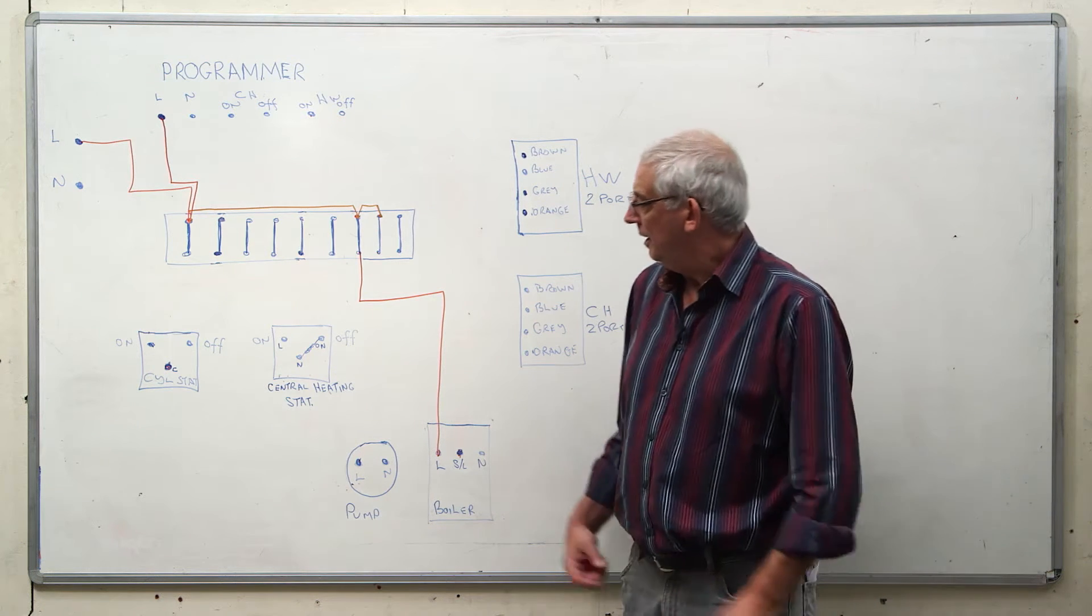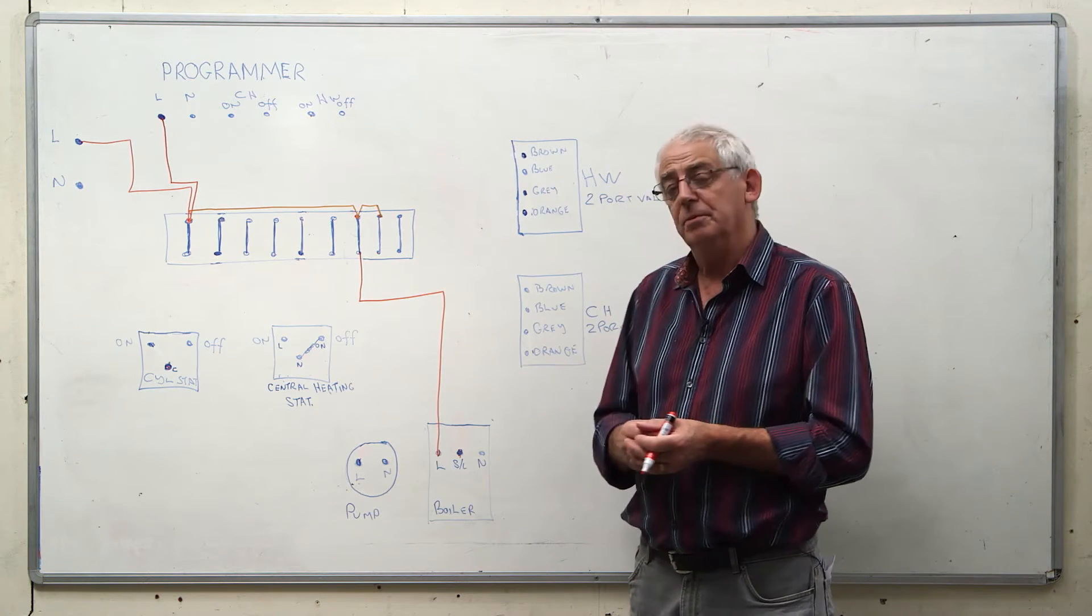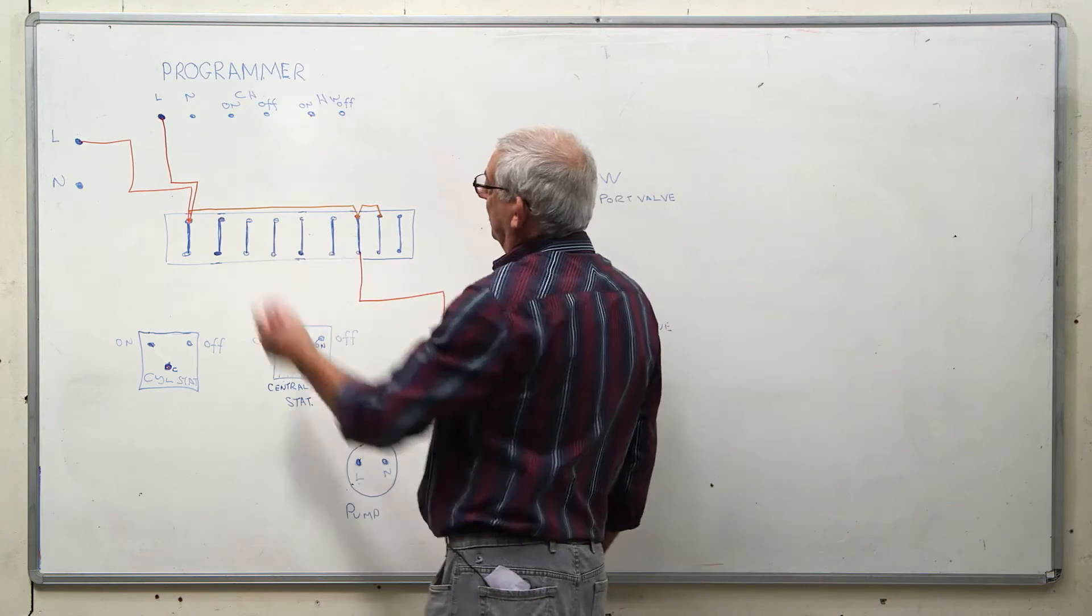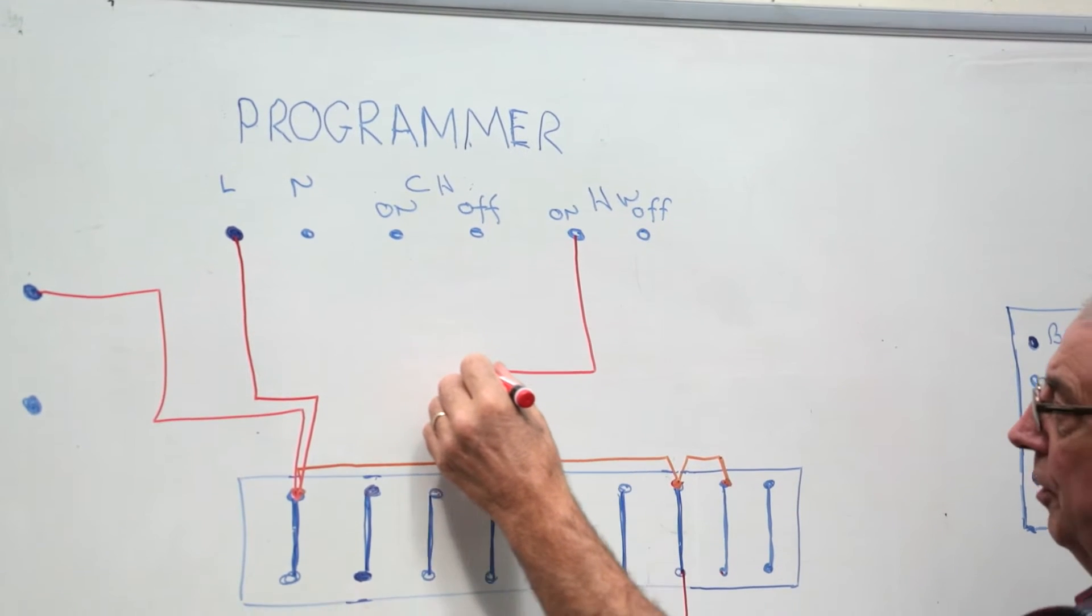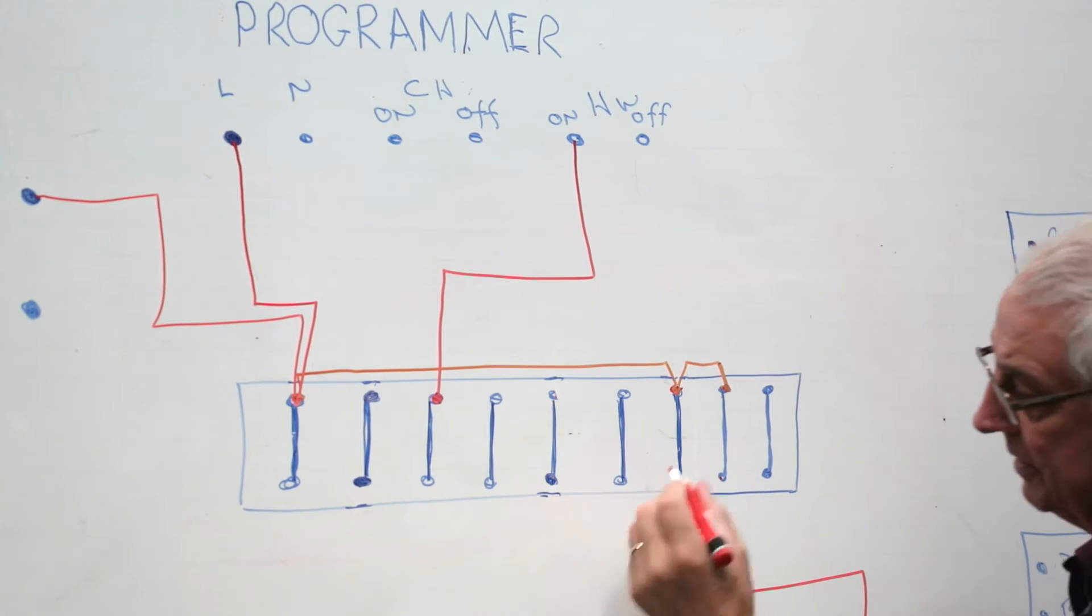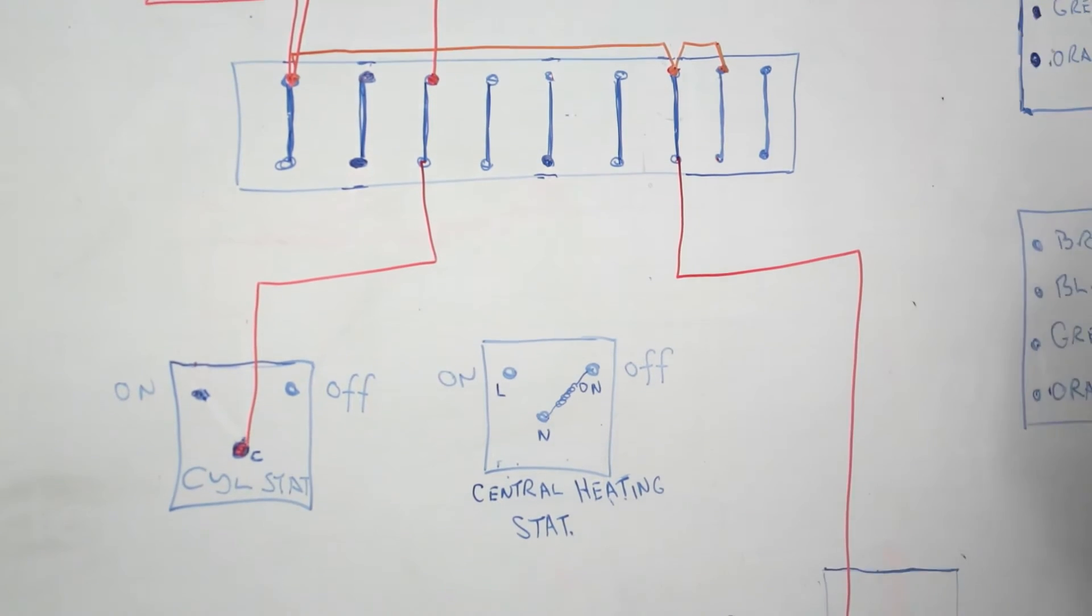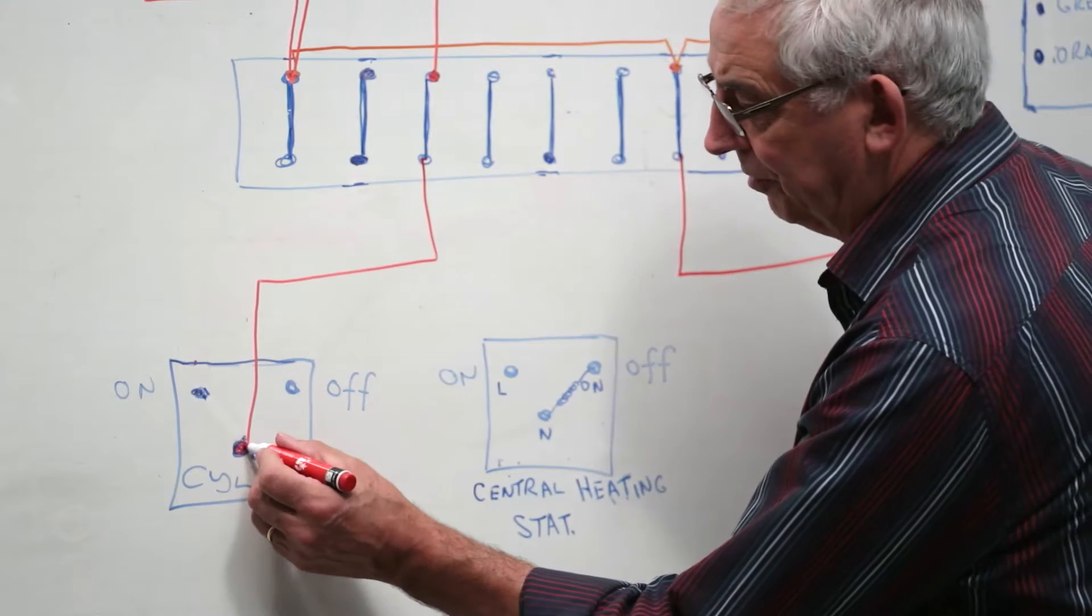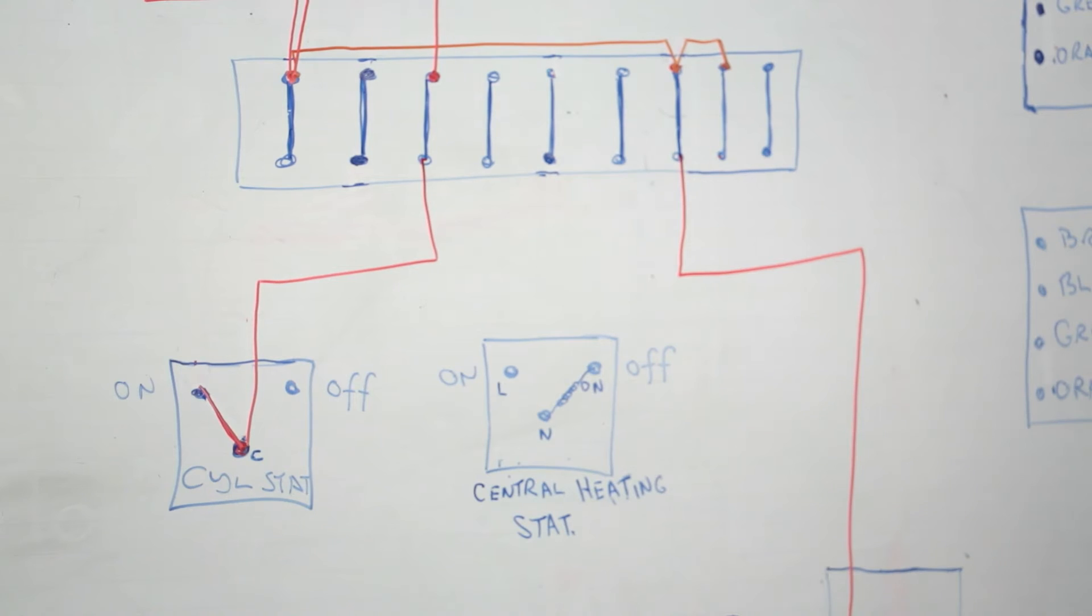Okay so let's just say then that we're switching the system on and the first thing we want to do is call for hot water. So I turn the programmer on, the programmer now calls for hot water. It sends a signal to the common of the cylinder stat. The cylinder stat is calling for heat. So obviously the on terminal now becomes live.